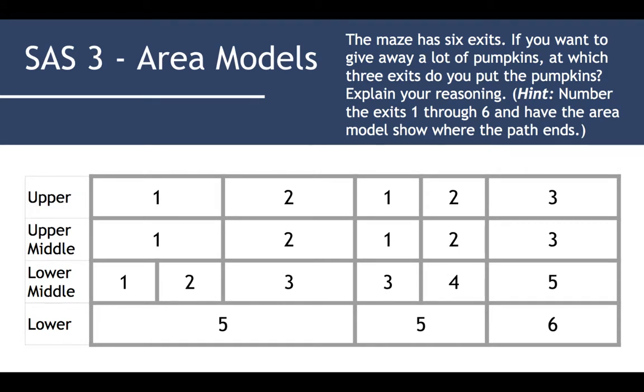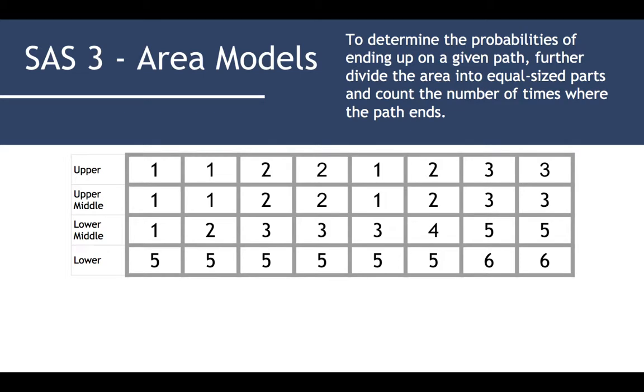The maze has six exits. If you want to give away a lot of pumpkins, what three exits do you put the pumpkins? Explain your reasoning. Hint: the number of exits one through six have the area model shown where the path ends. It's pretty simple. Determine the probabilities of ending up on a given path, further divide the area into equal size parts and count the number of times where the path ends.